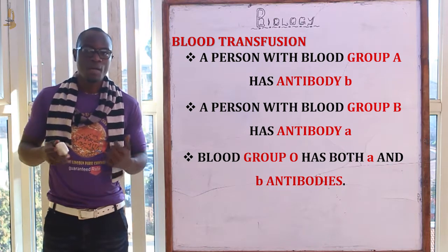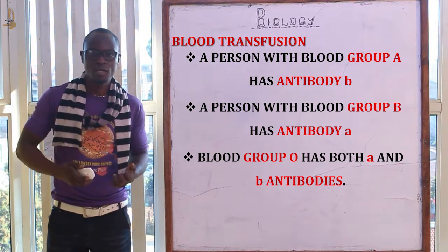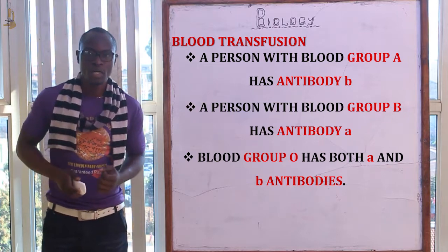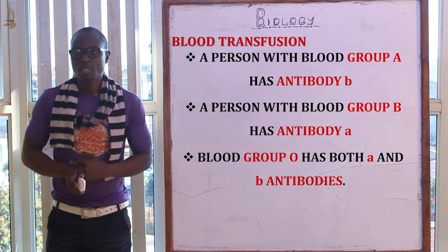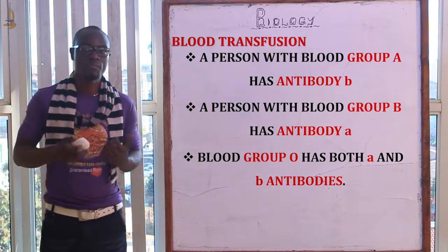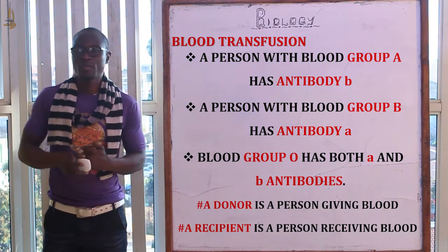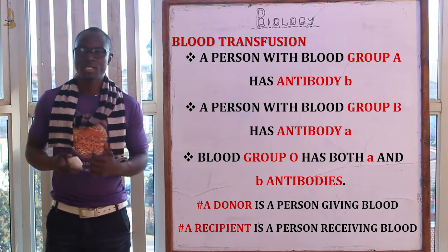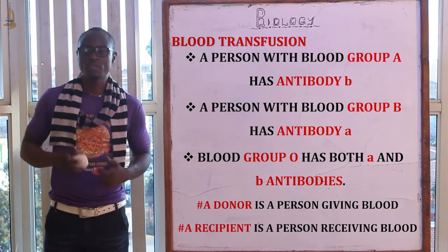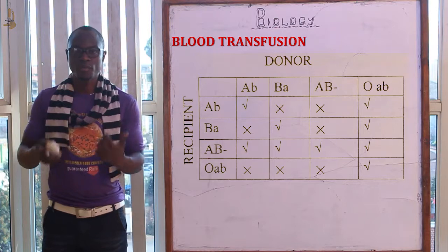A person with blood group A has antibodies small b, and a person with blood group B has antibodies small a. The person with blood group O has both small a and small b antibodies. Before we proceed to blood transfusion, let's define key terms: a donor is the person who gives blood, and a recipient is the person receiving blood from the donor.